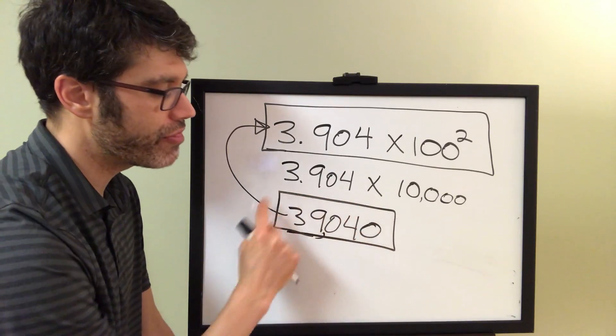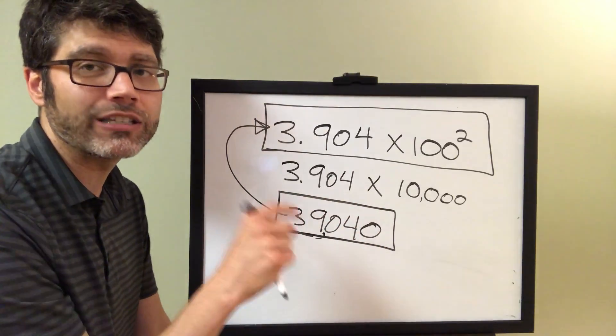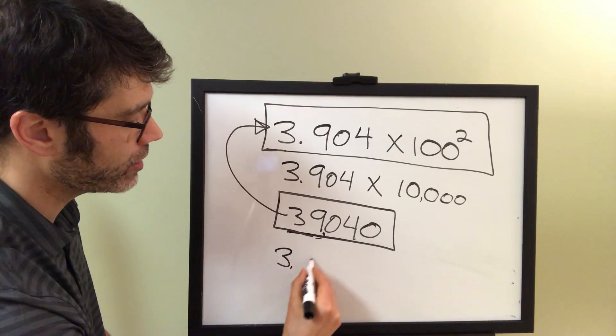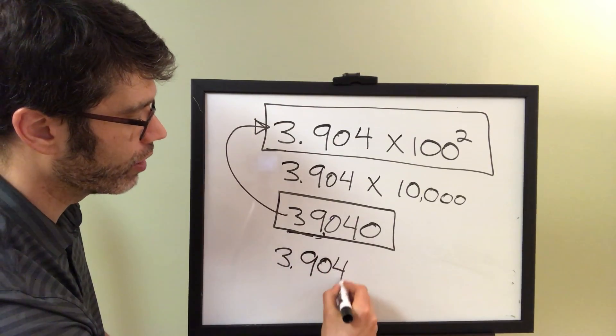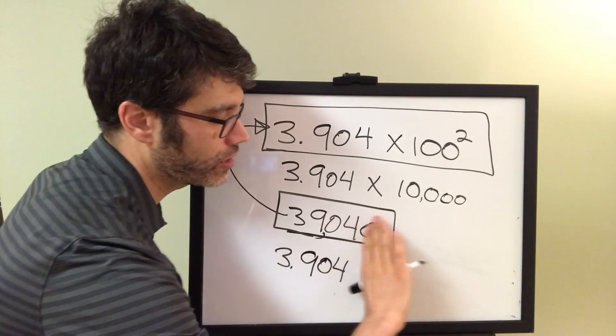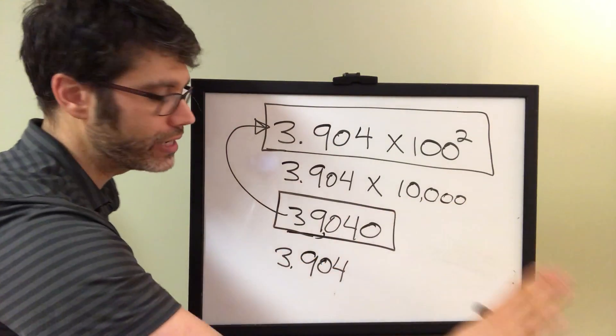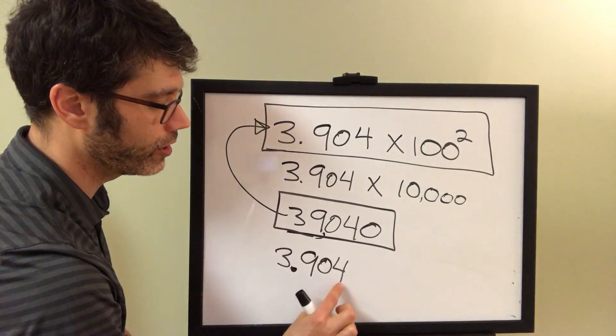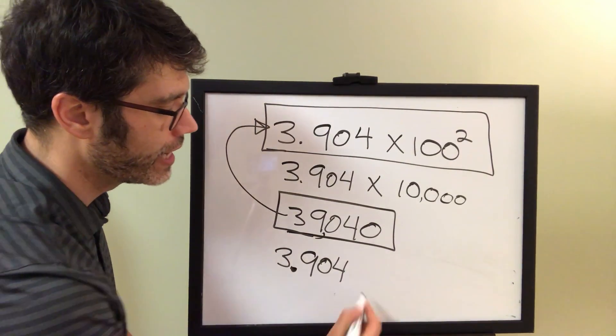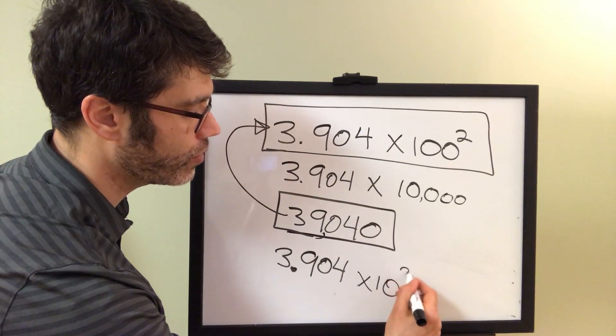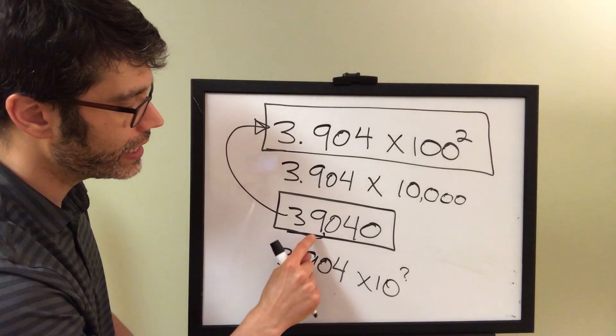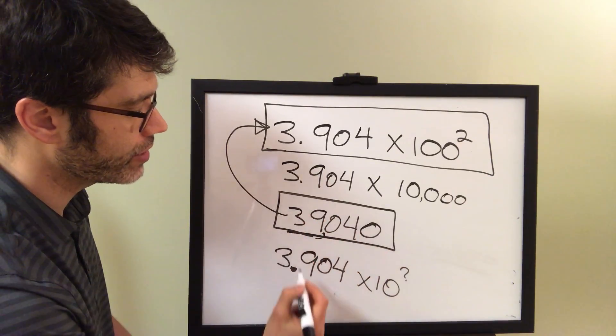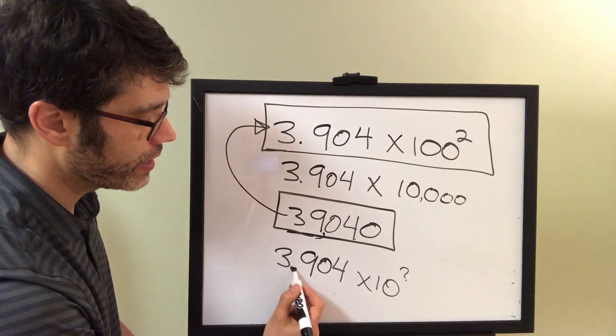So now let's try to get 39,040 into correct scientific notation. Well, we know that we need to do this, 3.904, and then once it starts becoming zeros forever, we just write up until the last non-zero digit here, times 10 to the what? Well, we need to bring this decimal point over how many times to get back to 39,040?